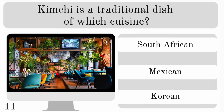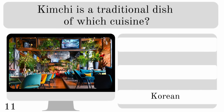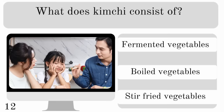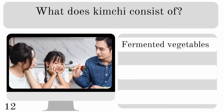Kimchi is a traditional dish of which cuisine — South African, Mexican or Korean? It is Korean. So what does kimchi consist of? Is it fermented vegetables, boiled vegetables or stir-fried vegetables? The answer is fermented vegetables.